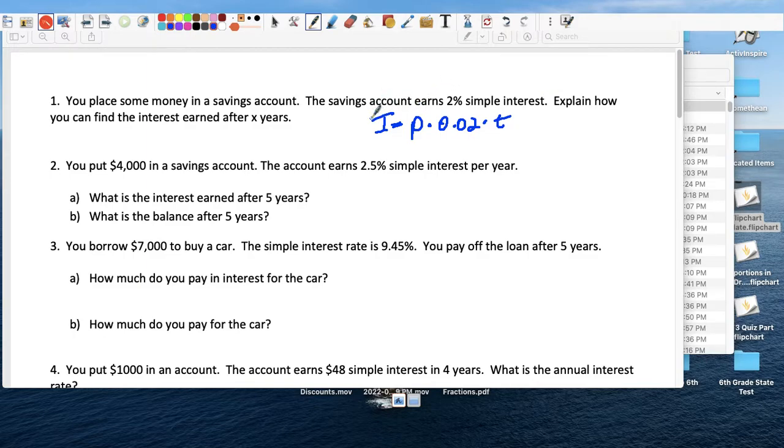It's pretty much restating the equation, right? Interest equals PRT. So that's pretty much what they're explaining, right, to find how much money is earned by the principal times the rate times the amount of time left in that account.